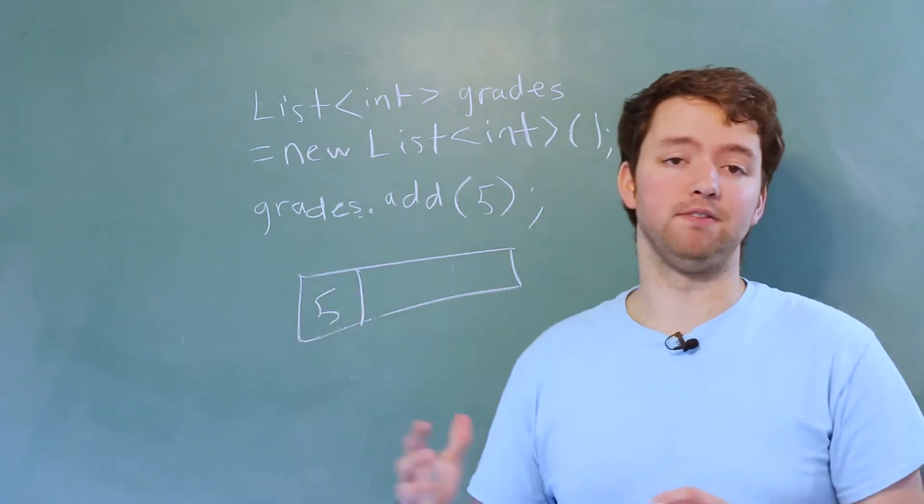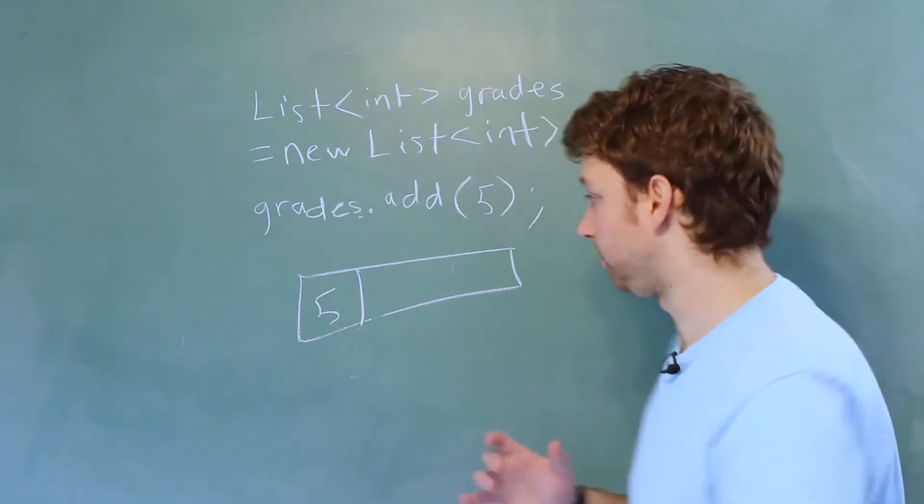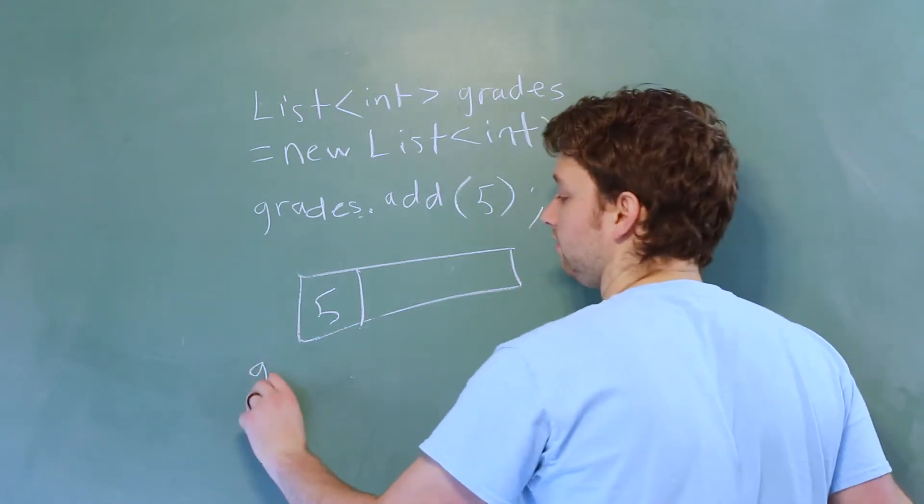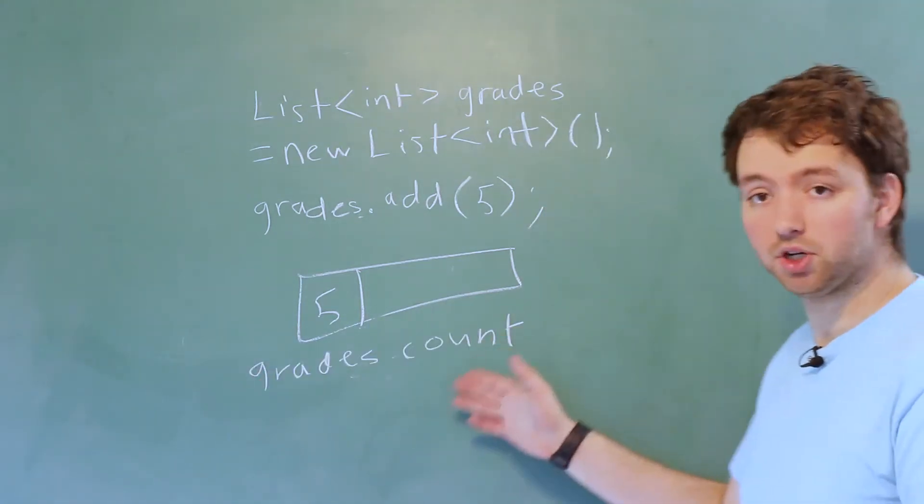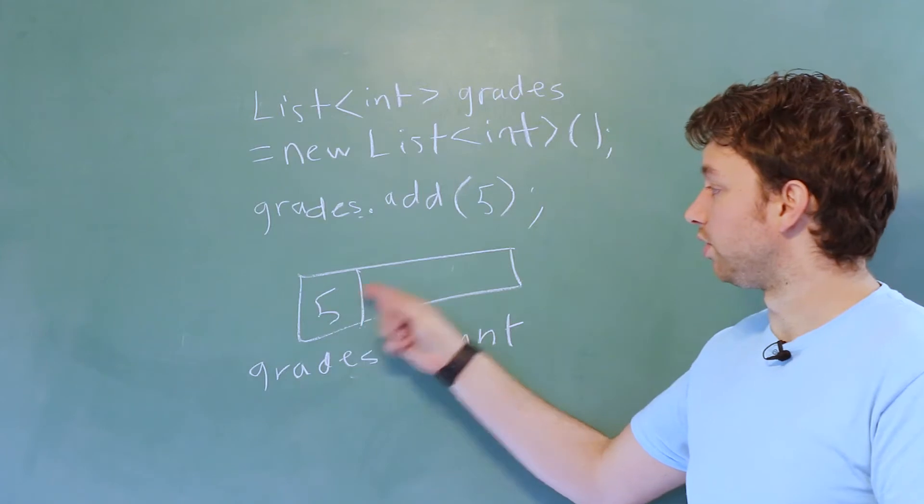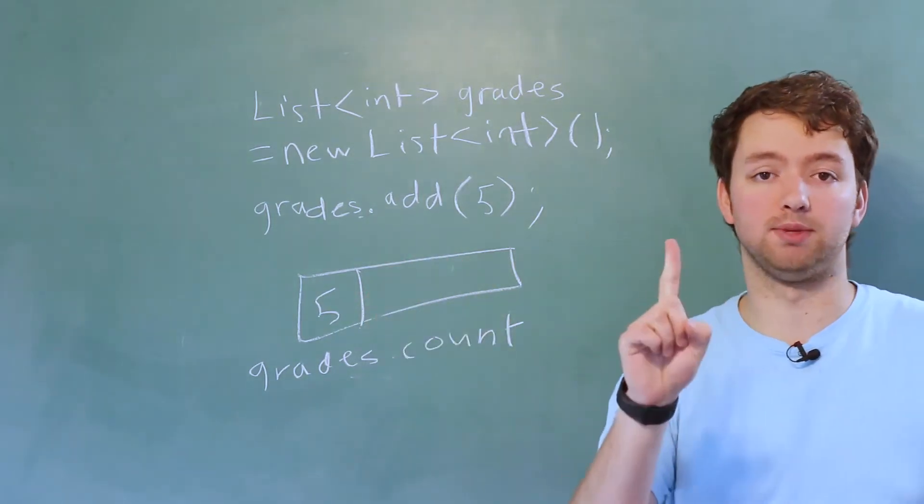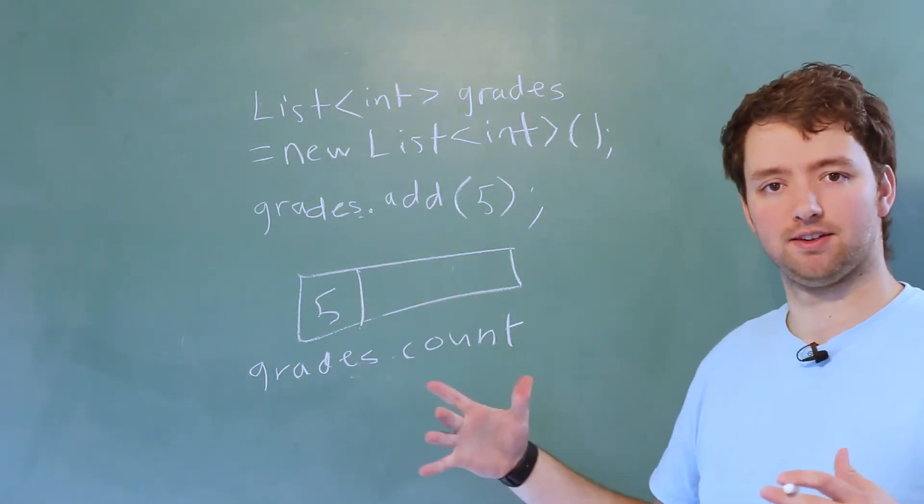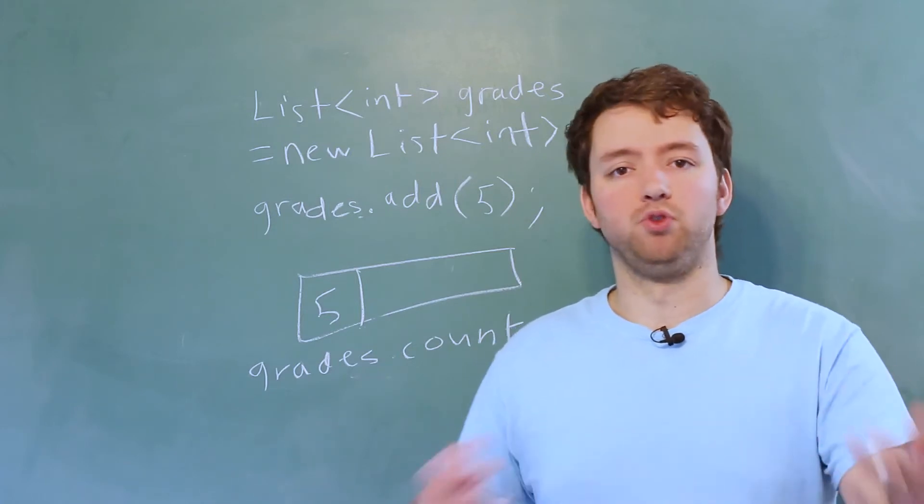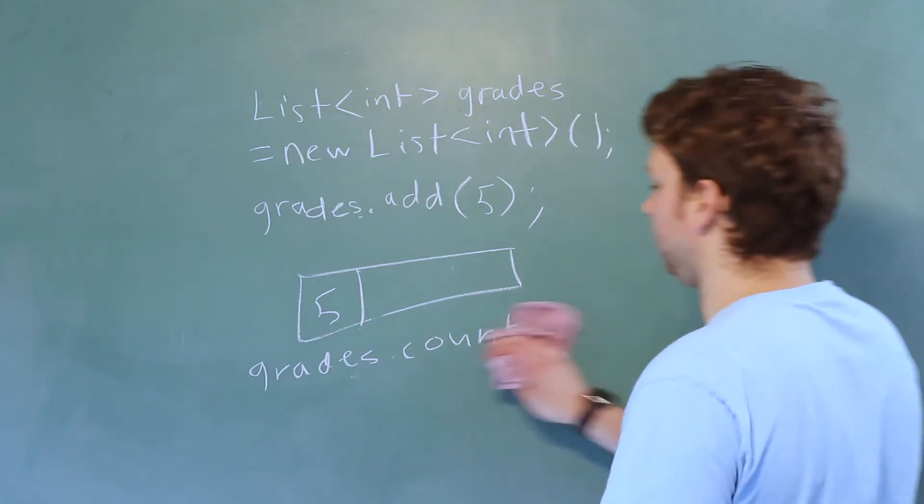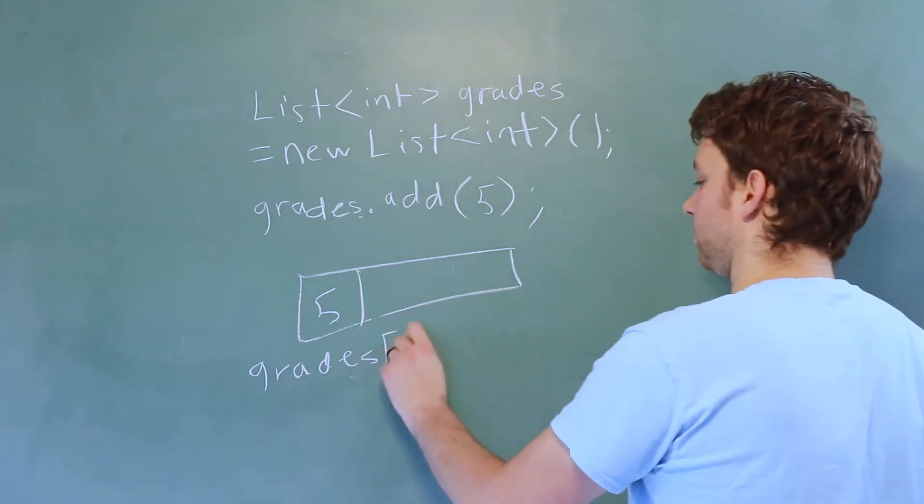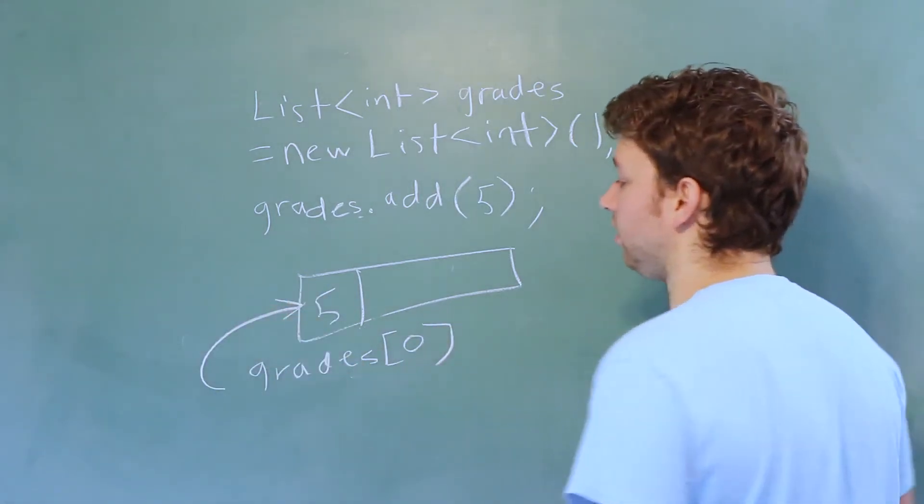We can get the number of elements we have in there using a property count. So to use that, we would say grades.count. This is going to return a number. In this case, it's going to return one because there's one element inside the list. You can access individual spots with normal indexing. So you could say grades index zero. That's going to grab this position right here.